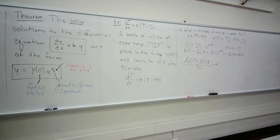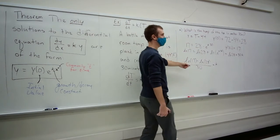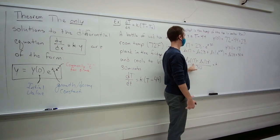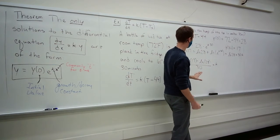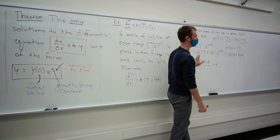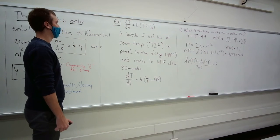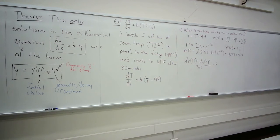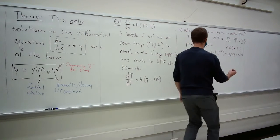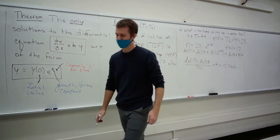Is k positive or negative? It's negative — from the context the tea is cooling down, and also ln(17) is less than ln(28) since the natural log is increasing, giving a negative difference on top divided by a positive, so it's a negative value. k is approximately −0.01663.